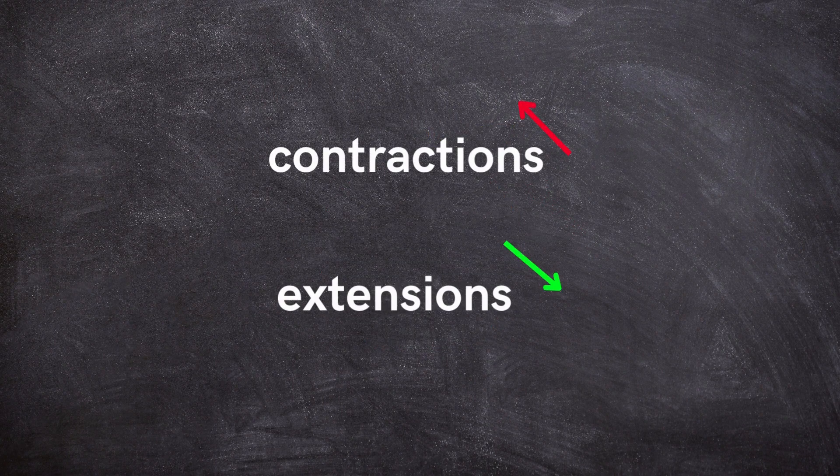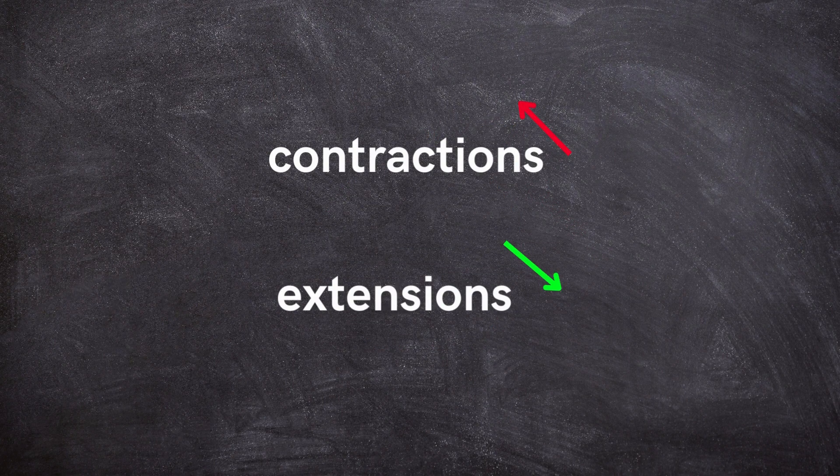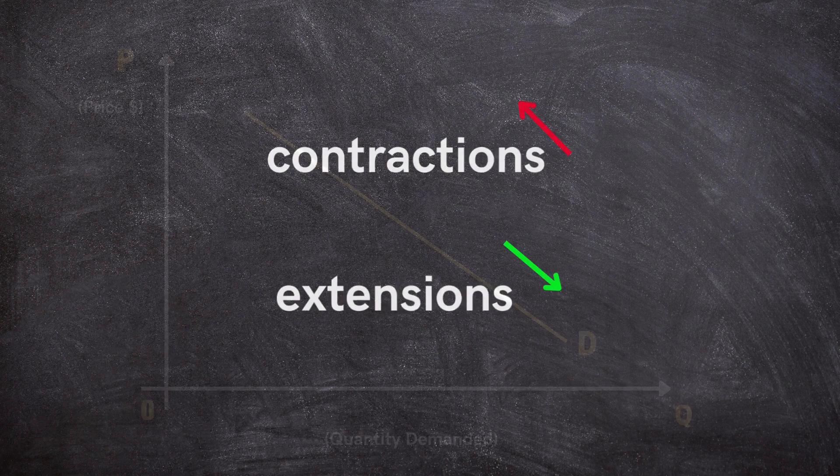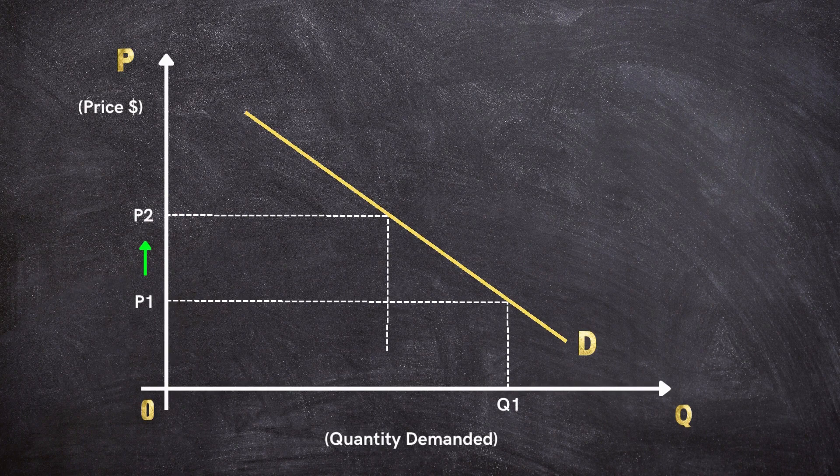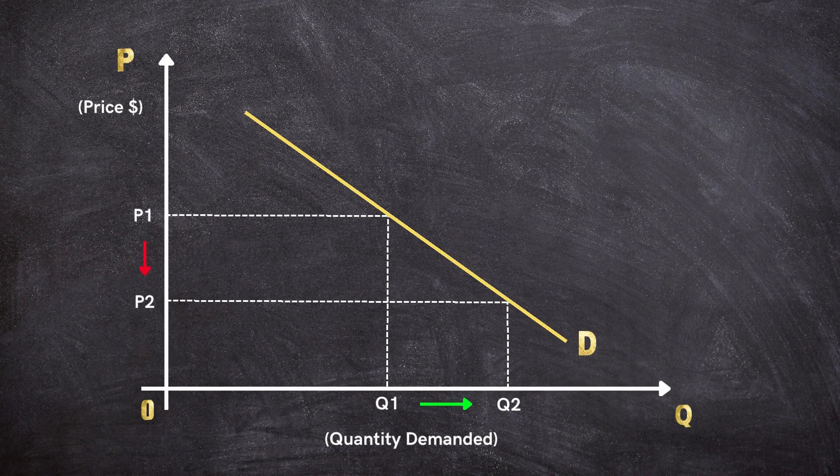Contractions and extensions are the terms we use to describe movements along the demand curve caused by price changes. When the price of a product rises, consumers usually purchase less of it, resulting in a contraction in the curve. On the other hand, when prices drop, consumers tend to buy more, leading to an extension in the curve.